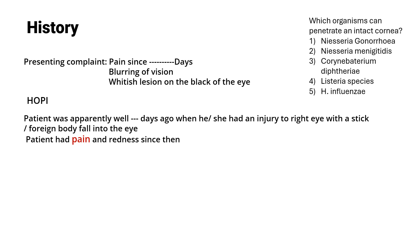There are only five organisms that can penetrate an intact corneal epithelium: Neisseria gonorrhea, Neisseria meningitidis, Corynebacterium diphtheriae, Listeria species, and H. influenzae. These are the organisms examiners may ask about.